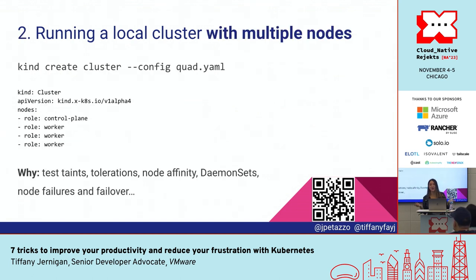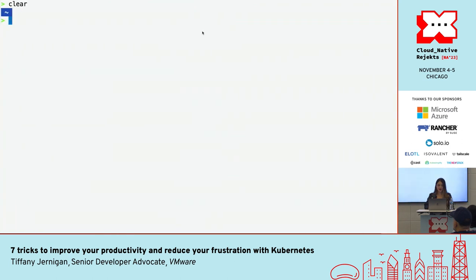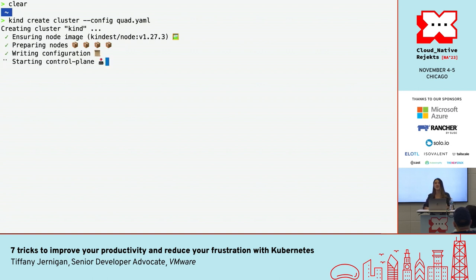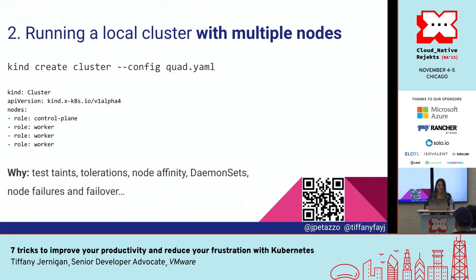Did you know that if you're using Kind you can actually create a cluster that has multiple nodes? I did not know this until pretty recently. You can just give it a YAML file and actually do that. I'm going to go and actually create that now. Depending on how the internet goes, hopefully this doesn't take forever since I should theoretically have the image pulled. I tried doing this at the pizza place last night and after four minutes I still didn't have NGINX running.